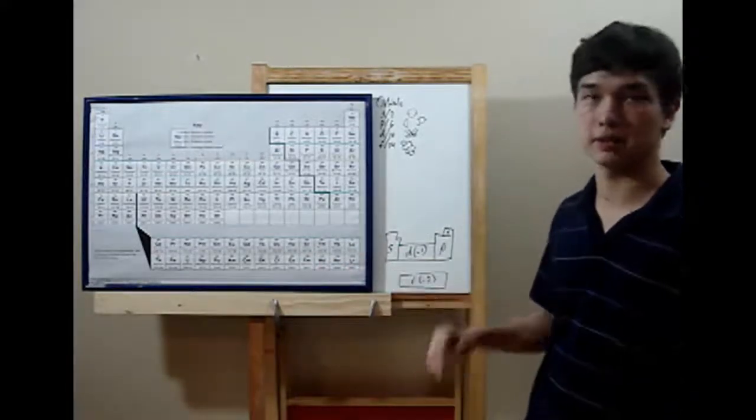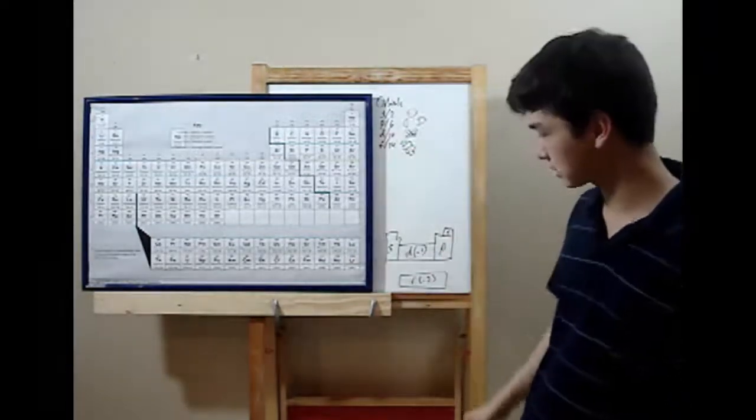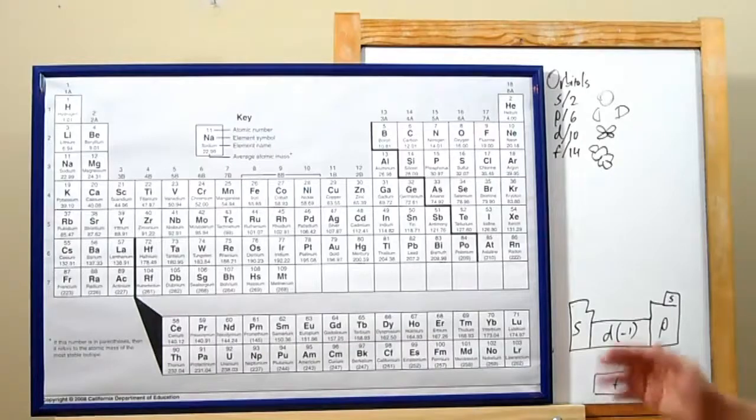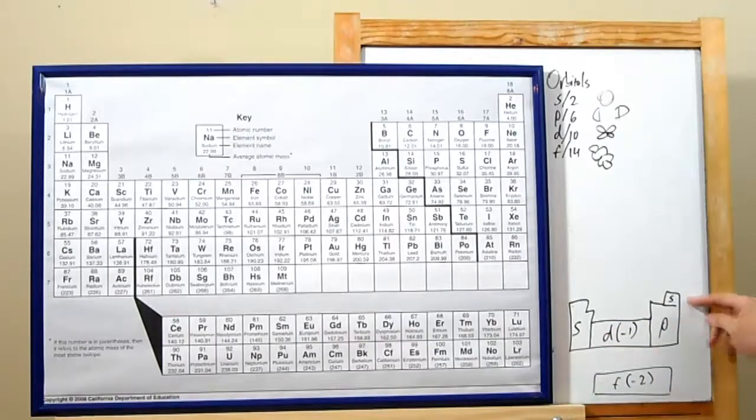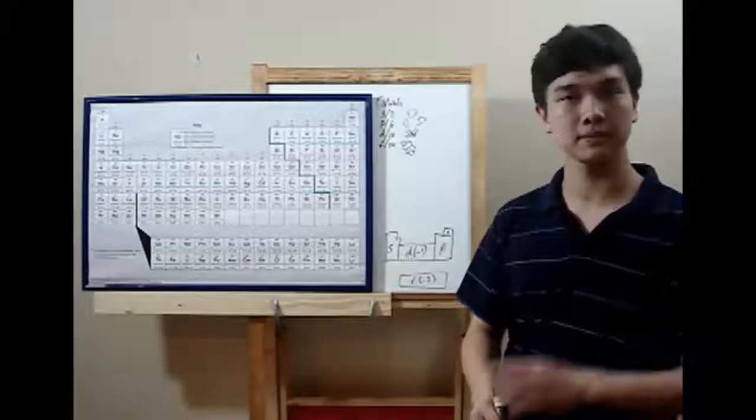First, block the periodic table into four different sections, s, p, d, and f, to correspond to the orbits. The s-block is groups one, two, and the element helium. The p-block is groups three through eight, with the exception of helium. The d-block is all your transition metals, and f-block are the lanthanides and actinides at the bottom of the table.